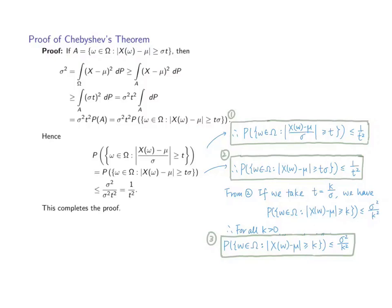We can also divide both sides of this inequality by sigma to get another format of presentation for Chebyshev's theorem. So we get the first format, which states that the probability of the event that collects all elements from omega fulfilling the absolute value of x minus mu divided by sigma greater than or equal to t is less than or equal to 1 over t squared. The second way of presenting Chebyshev's theorem is that the probability of the event containing all elements from omega which fulfills that the absolute value of x minus mu is greater than or equal to t times sigma is less than or equal to 1 over t squared.